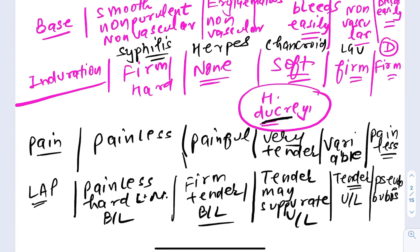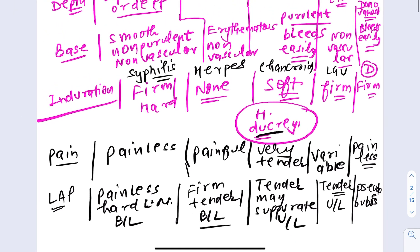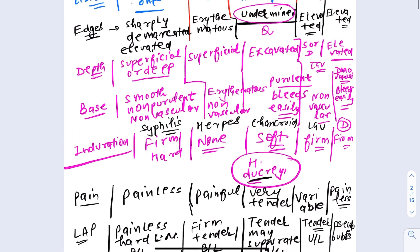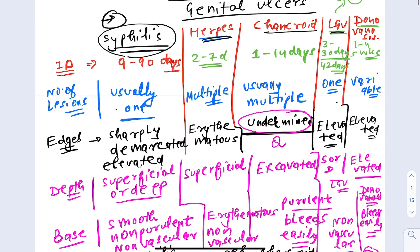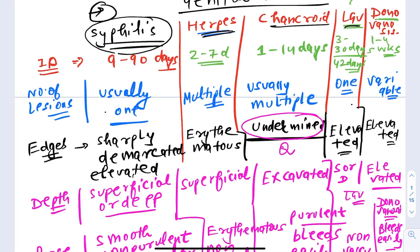Pseudobuboes are seen in donovanosis. To remember the sequence of all genital ulcer diseases: S-H-CLD — Syphilis, Herpes, Chancroid, LGV, Donovanosis. CLD can stand for 'Chronic Liver Disease' as a memory aid. Going in this sequence makes it easy to remember all features systematically.